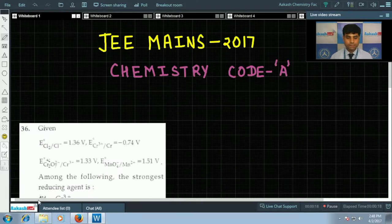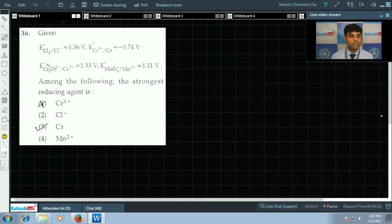Hello everyone, let us discuss question number 36. We have E0 values, reduction potential values of chlorine, chromium, dichromate, and permanganate ion. The question is: among the following, the strongest reducing agent is. The options are Cr3+, Cl-, Cr, and Mn2+.